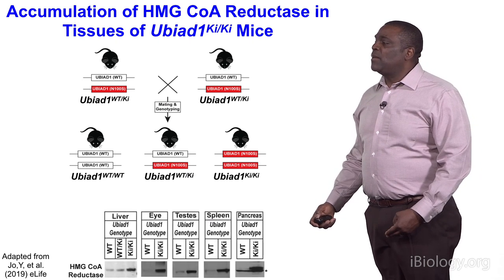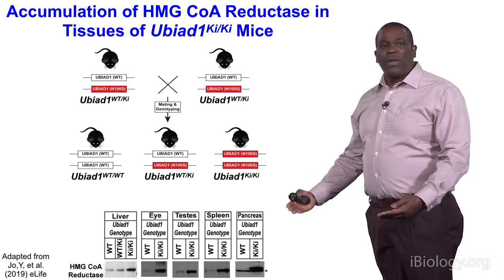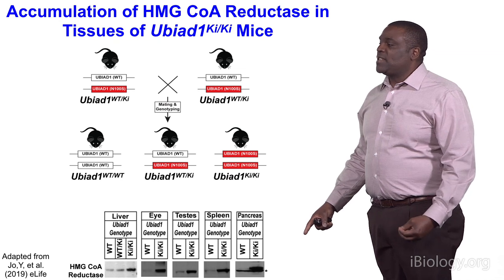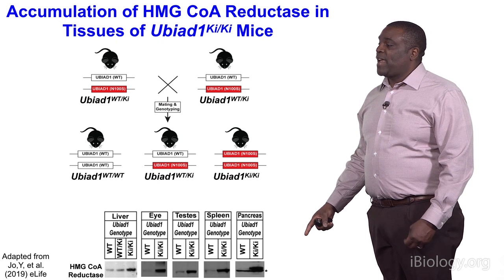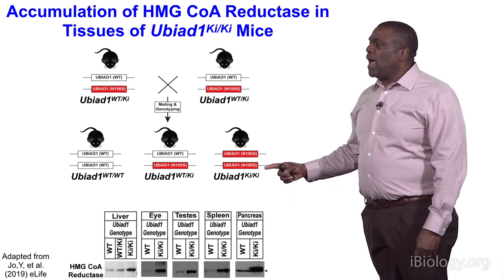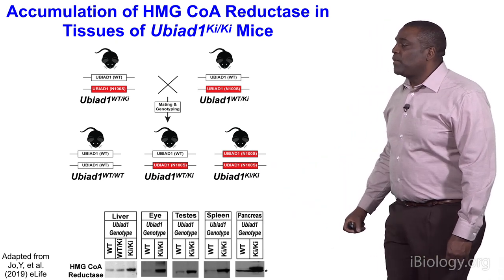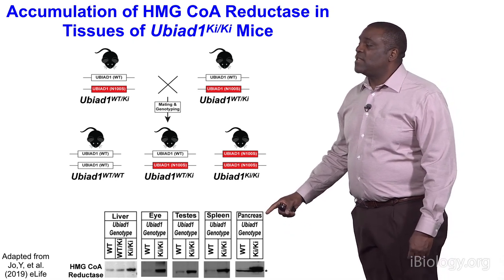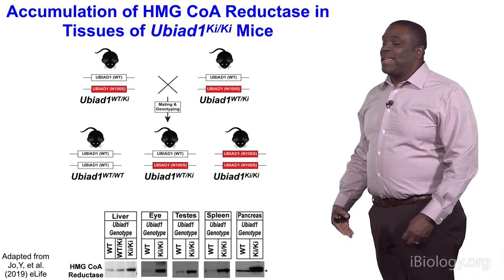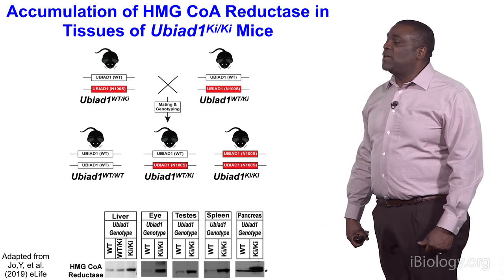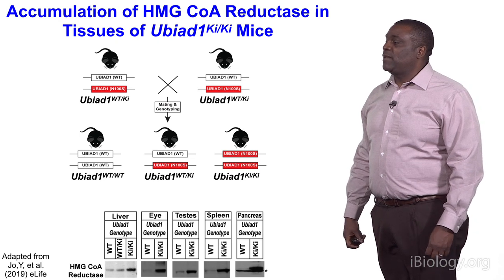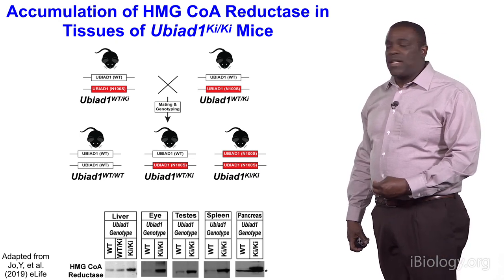We isolated these animals, collected various tissues, and performed immunoblot analysis of HMG-CoA reductase. In the liver, reductase levels are low in wild-type animals, increased in animals with one defective UBIAD1 copy, and accumulate even further in animals homozygous for the N100S mutation. A similar accumulation of reductase was observed in the eye, testes, spleen, and pancreas. These results indicate that, just as in cultured cells, the N100S SCD-associated mutation leads to a block in reductase degradation and a marked accumulation of reductase protein, confirming that ERAD of reductase is blocked in these knock-in mice.